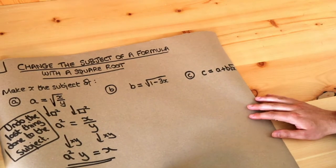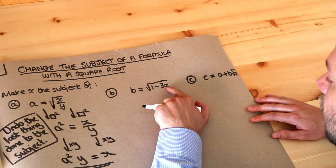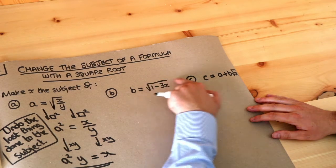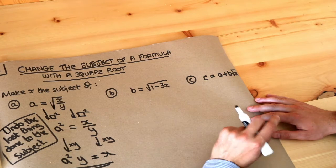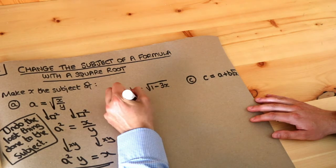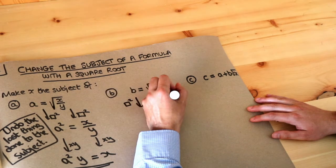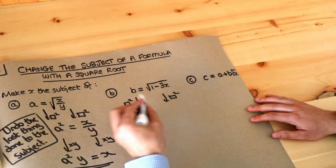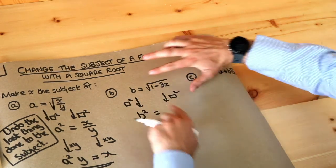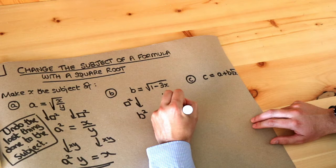Okay, next one. Let's think about what's happening to x: it was times by three, then subtracted from one, and then we square rooted the whole thing. The last thing that happened was the square root, so we undo that first by squaring both sides. So b gets squared to give b squared, and squaring the right hand side gets rid of that square root leaving one minus three x.